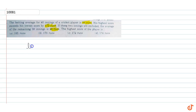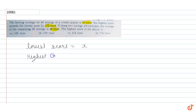Let's say the lowest score is equal to x. So if lowest score is equal to x, then the highest score is equal to x plus 172.